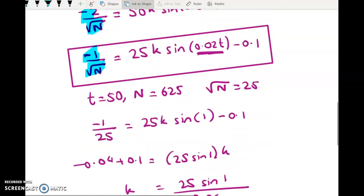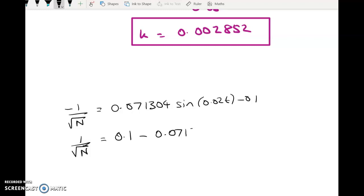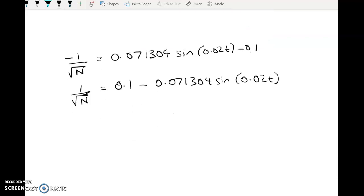So we've got negative 1, all we're doing here is substituting that K value in and timesing it by 25. So negative 1 over root N equals 0.071304, that's 25K, sine of 0.02T minus 0.1. So 1 over root N, I would just rather work with it like this, 1 over root N, not negative 1 over root N, equals 0.1 minus this.